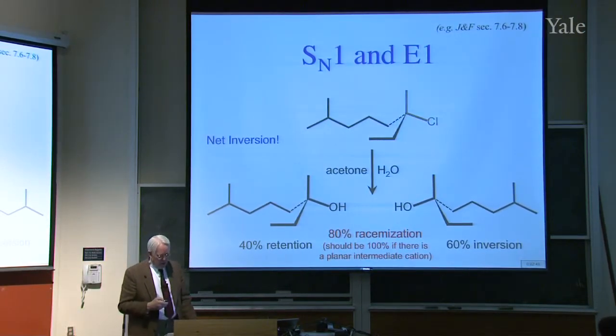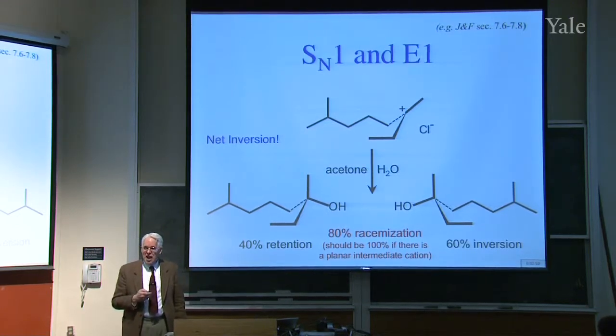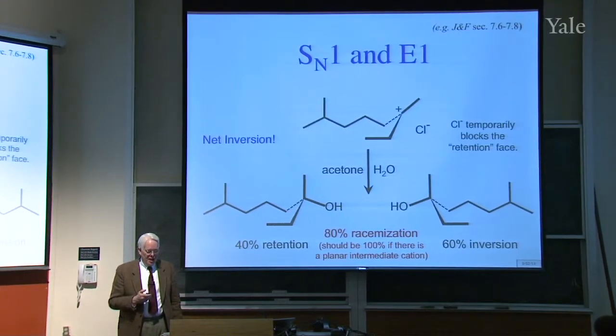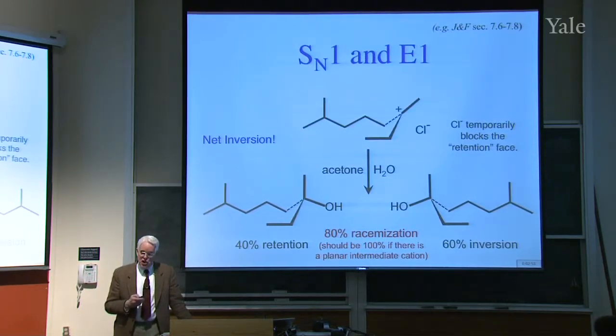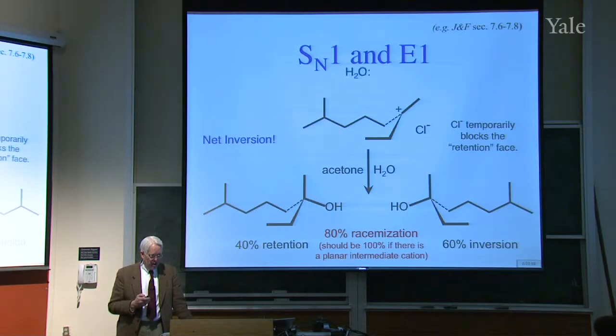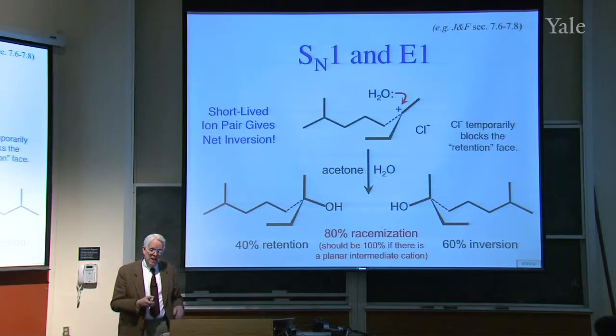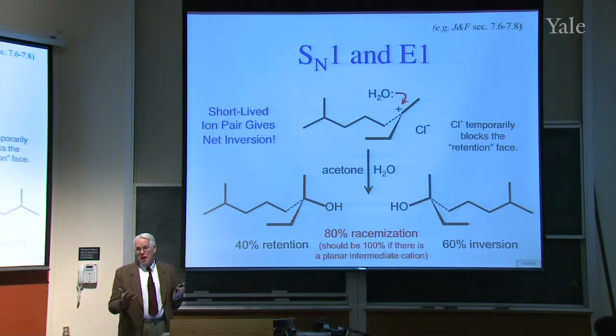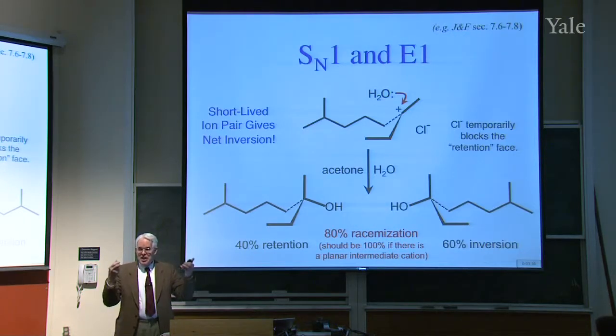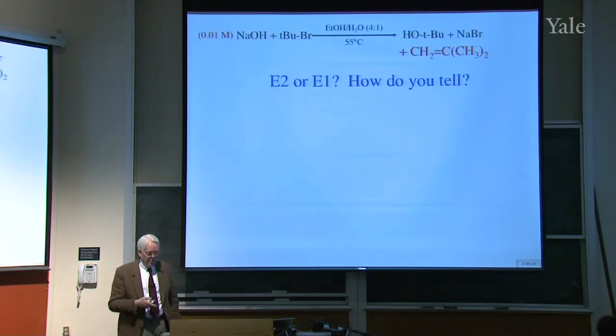The idea to explain the net inversion is that chloride for a short time is still there, even though not bonded. It temporarily blocks the face that would lead to retention. You get more water coming in from the opposite face. This short-lived ion pair gives an explanation for the net inversion. Even though people say SN1 gives racemization, it doesn't always do so, although it depends on the solvent.